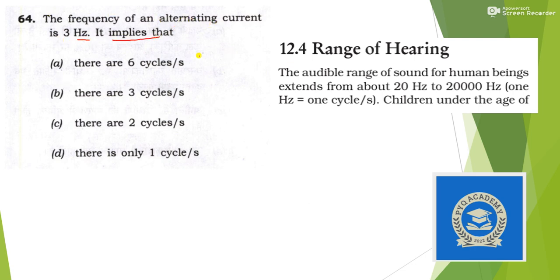Next: the frequency of an alternating current is 3 hertz — what does it imply? From the sound chapter of class 9: 1 hertz equals 1 cycle per second. So 3 hertz means 3 cycles per second. Answer is option B.